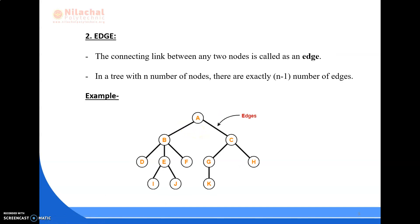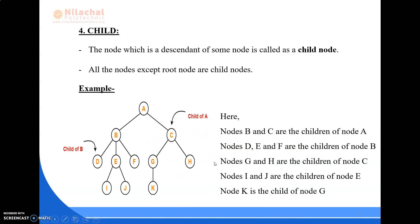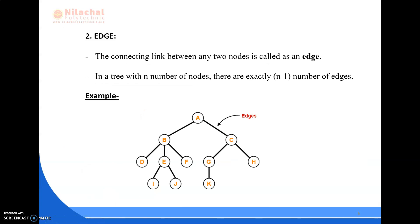Next comes edges. The connecting link between any two nodes is called an edge. In a tree with N number of nodes, there are exactly N minus 1 number of edges. So the connecting links between A and B, A and C, C and G, G and K — all are known as edges, also called links.